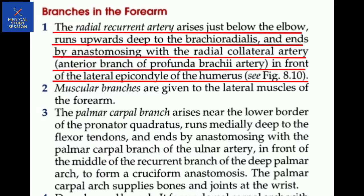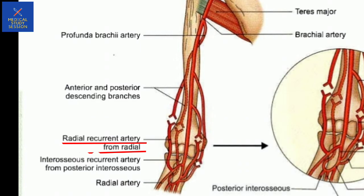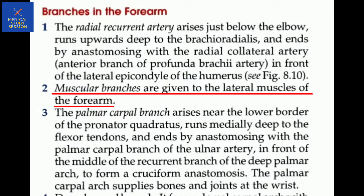Branches of the radial artery: First, the radial recurrent artery arises just below the elbow, runs upward deep to the brachioradialis, and ends by anastomosing with the radial collateral artery - the anterior branch of the profunda brachii artery - in front of the lateral epicondyle of the humerus. Second, the muscular branches are given to the lateral muscles of the forearm.